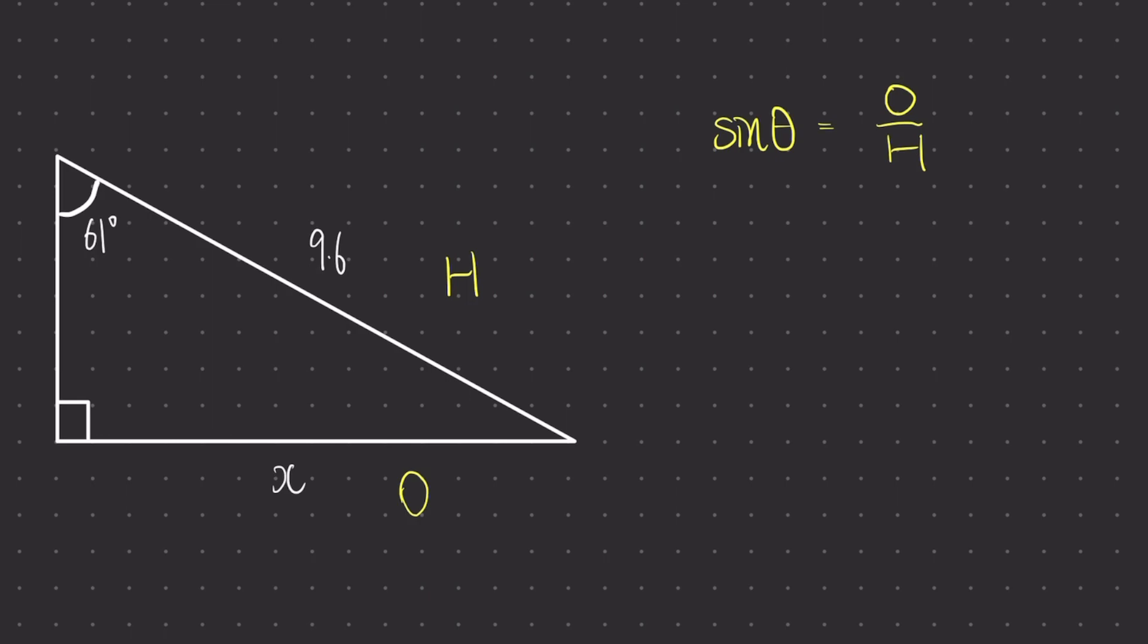So I write sine down with open brackets, input the angle 61, and remember to always close your brackets of your sine function.